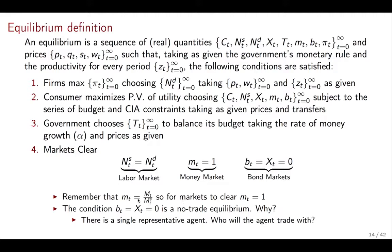Why is this equal to one? Well, remember that mT is the ratio of the money demand of consumers relative to the money supply from the government. Well, for this to clear, those two have to be equal. And so little mT has to be equal to one. So mT equal one is the same as money market clearing. And then bonds have to be all equal to zero, both nominal and real bonds. Why are they equal to zero?